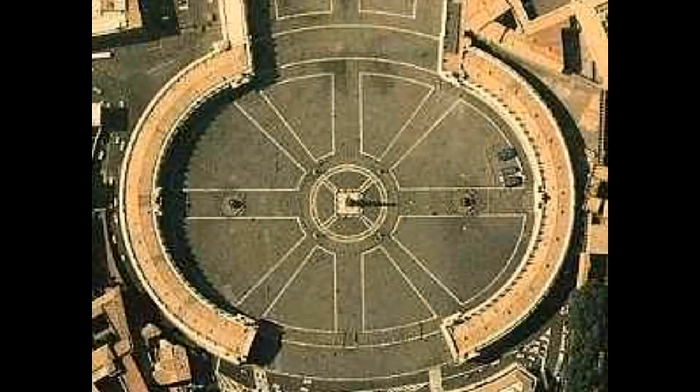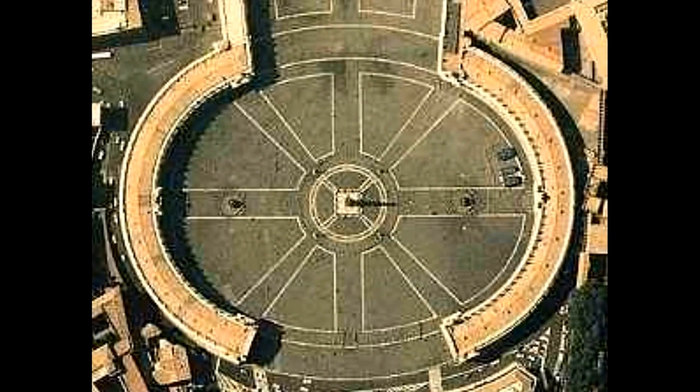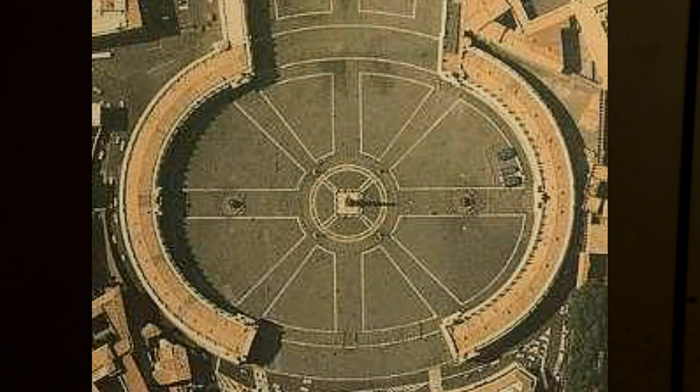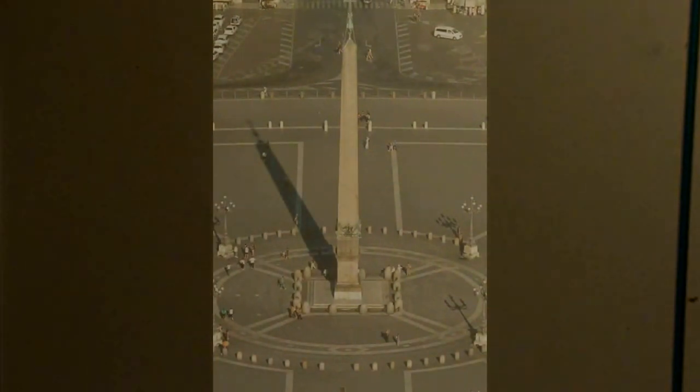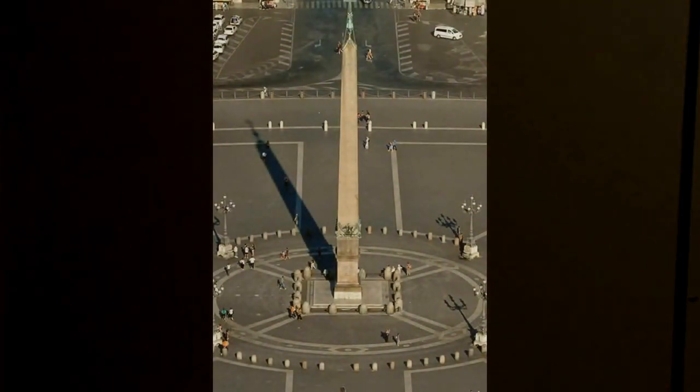All right, today's video is going to be on the Vatican as a sundial. So why is the Vatican the largest sundial in the world? And also, another question is, why is there an Egyptian obelisk in the center of that sundial? There is said to be 22 Egyptian obelisks outside of Egypt, and 13 of them are in Italy.